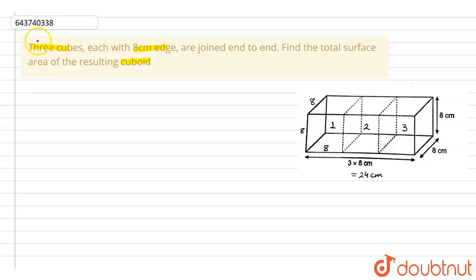First of all, we know the surface area formula of cuboid is equal to the surface area of cuboid equals two into length into breadth plus breadth into height plus height into length. So this is the formula for surface area of cuboid.